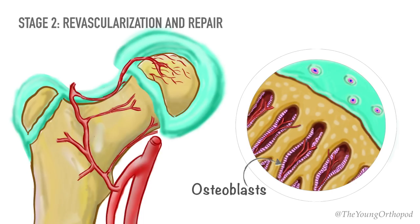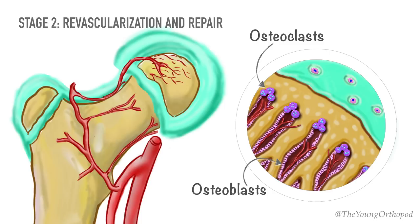Osteoclasts reabsorb the dead bone, particularly in the subchondral area. Some of the dead trabecular fragments are resolved and replaced by fibrous tissue. The alternating areas of sclerosis and fibrosis appear on the x-rays as fissuring of the epiphysis.